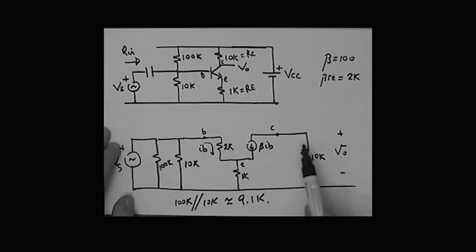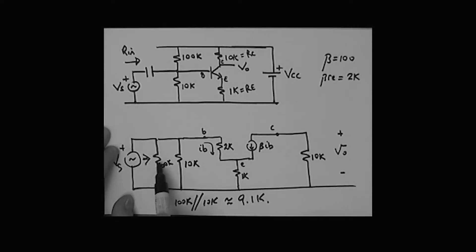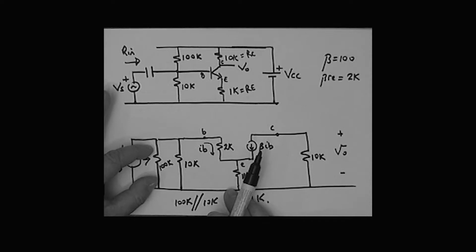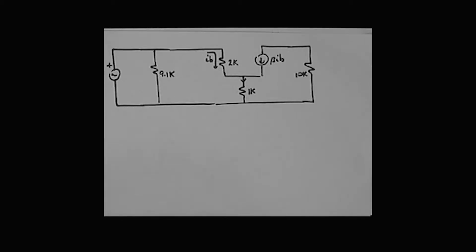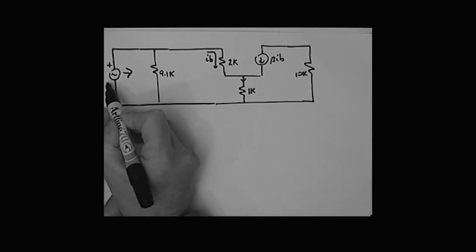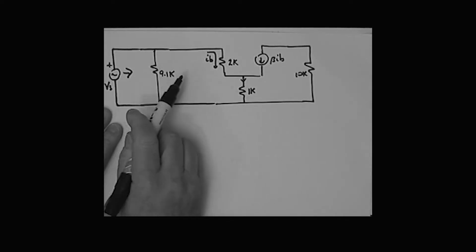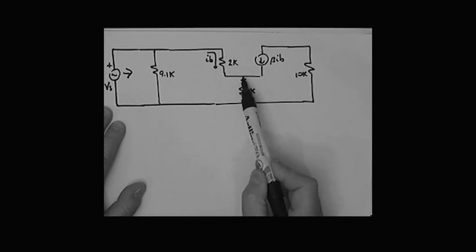Here is my equivalent circuit, and I'm asking the same question: what is the resistance that this signal source sees as we look in? We're going to redraw this circuit in simplified form, combining the two resistors as we did before. Here is the circuit redrawn - my VS signal source is sitting over here. What is the resistance that we see looking in here? There's a 9.1k, but this looks kind of messy and complicated.